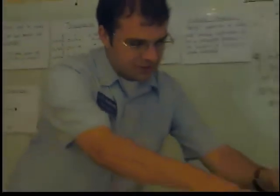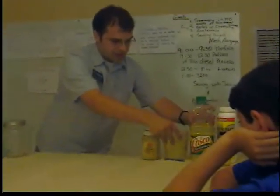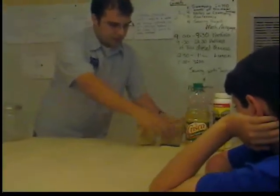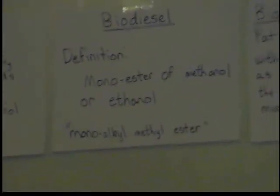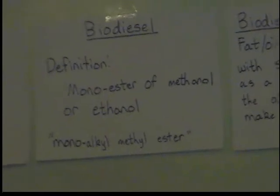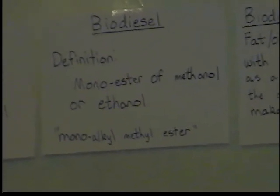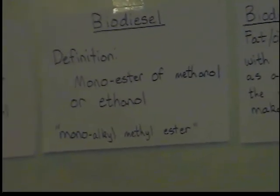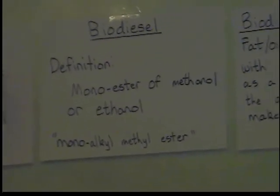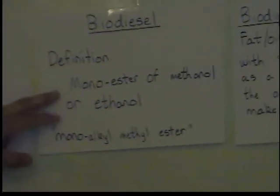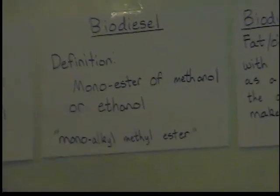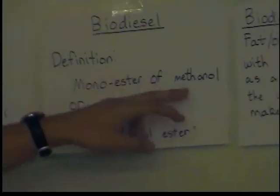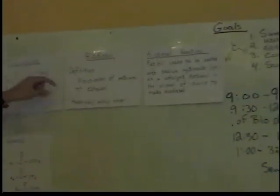Both of these right here are Crisco oil, and these are known as triglycerides. So then we come to biodiesel. In order to make biodiesel, we have to take this triglyceride or fatty acid oil and add things to it to make it biodiesel. The scientific definition of biodiesel is a monoester — a methanol or ethanol. You can use an alcohol to convert this into biodiesel.